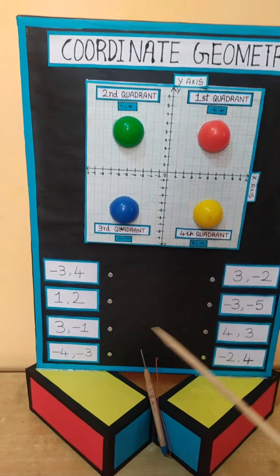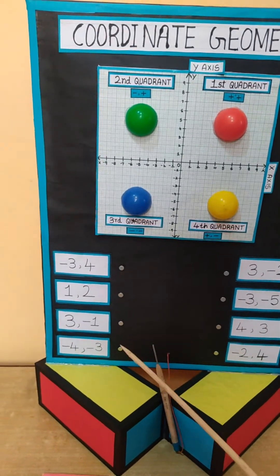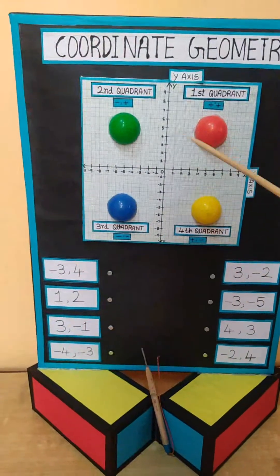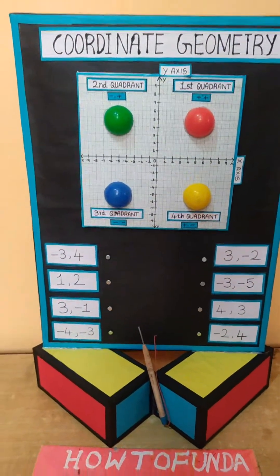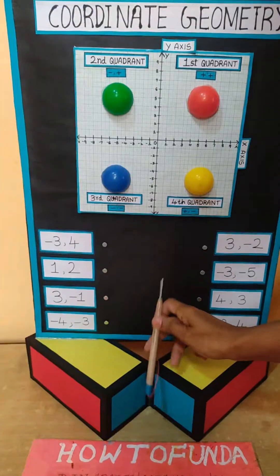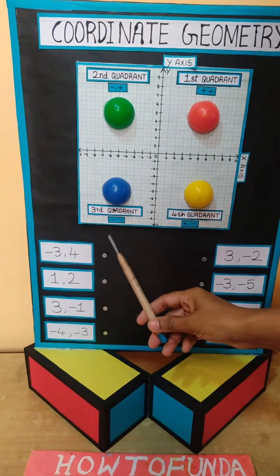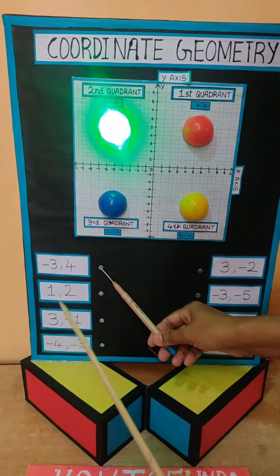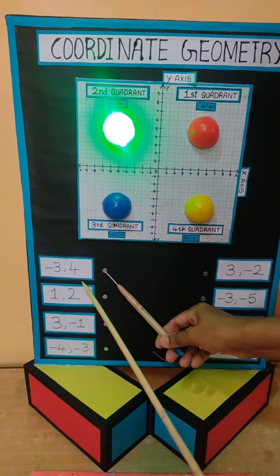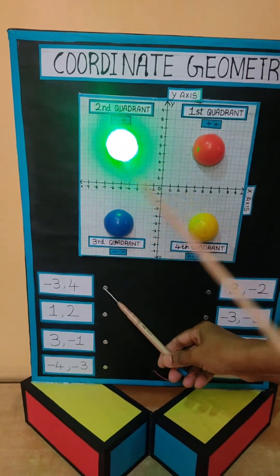Now we are going to demonstrate how this working model really works. By selecting any of these coordinates, the appropriate quadrant light is going to glow.